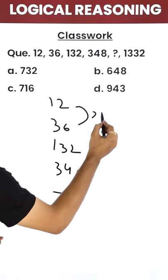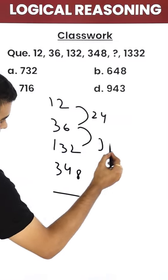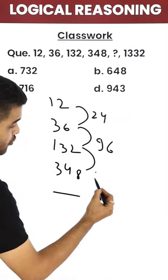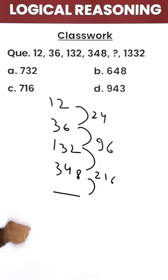Now check the pattern. 24. Check the pattern, 96. Up next is 216 and the next is unknown. How do you do it?